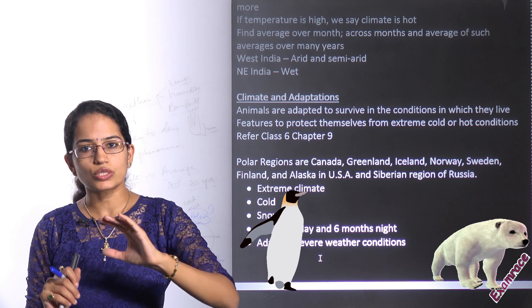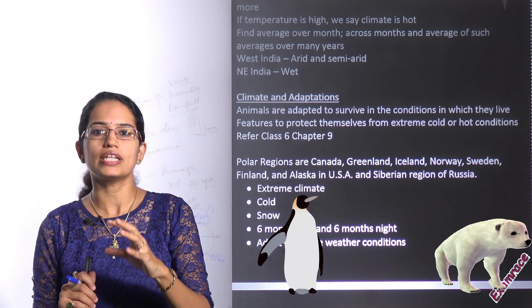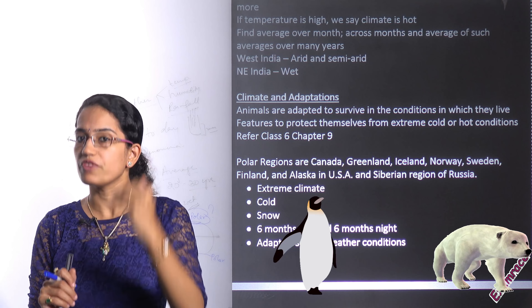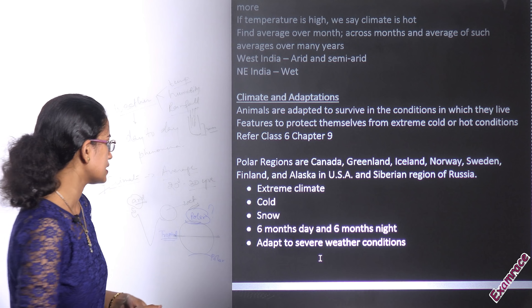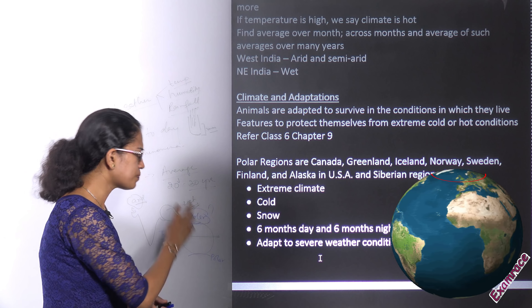Now comes climate and adaptations. We'll be talking about two regions today. Looking at the globe, we have the tropical belt, which is closer to the equator, and the polar belt. Some animals live in the polar area and others in the tropical area. Definitely, the adaptations for these two regions would vary.